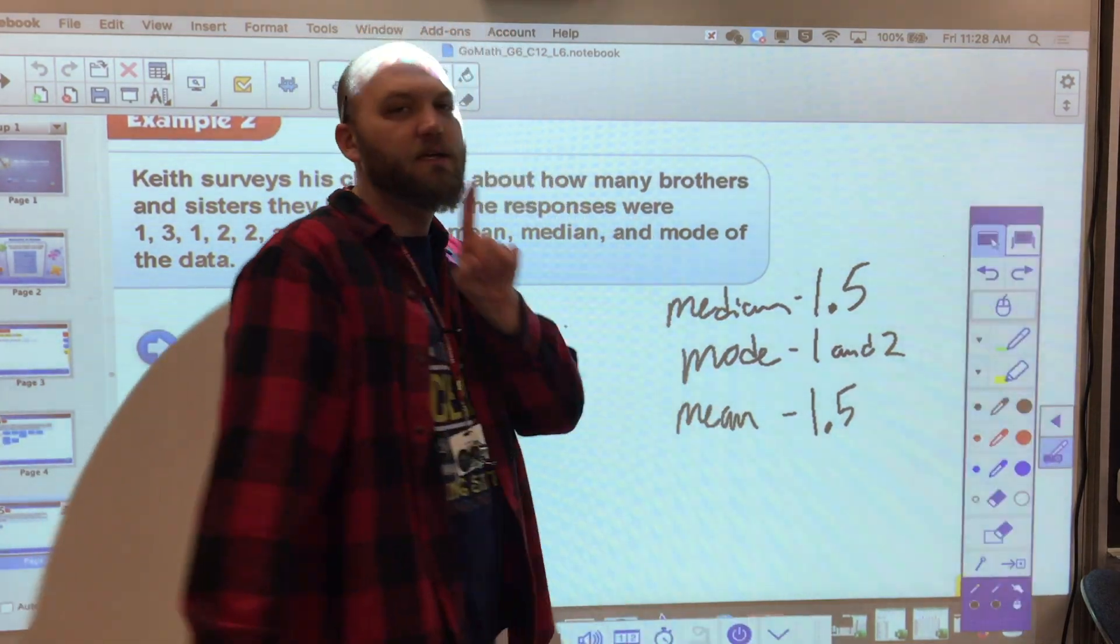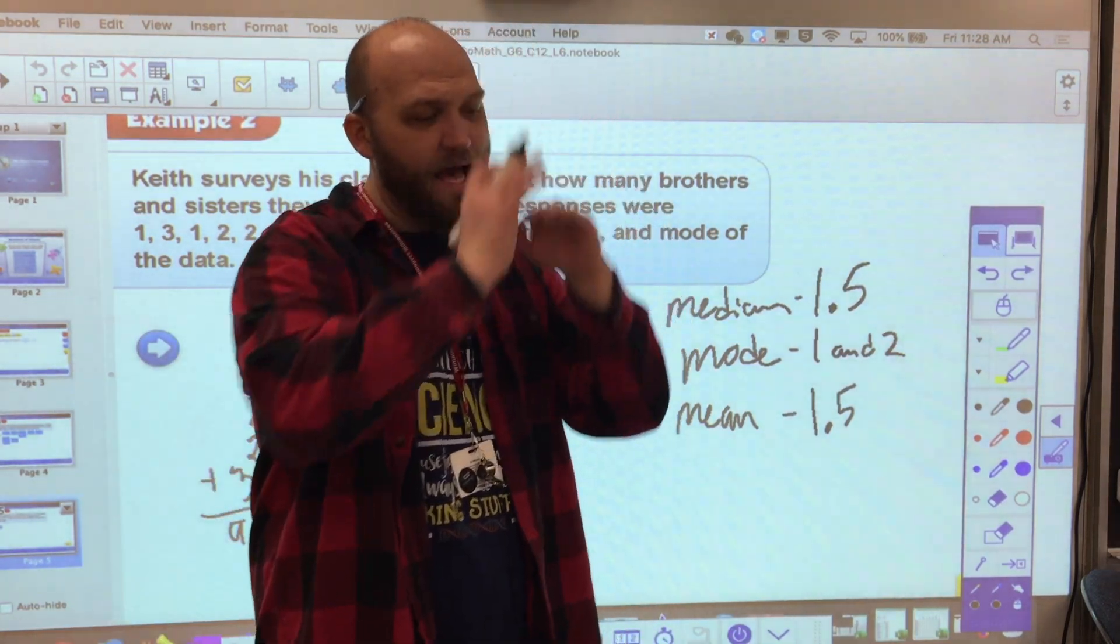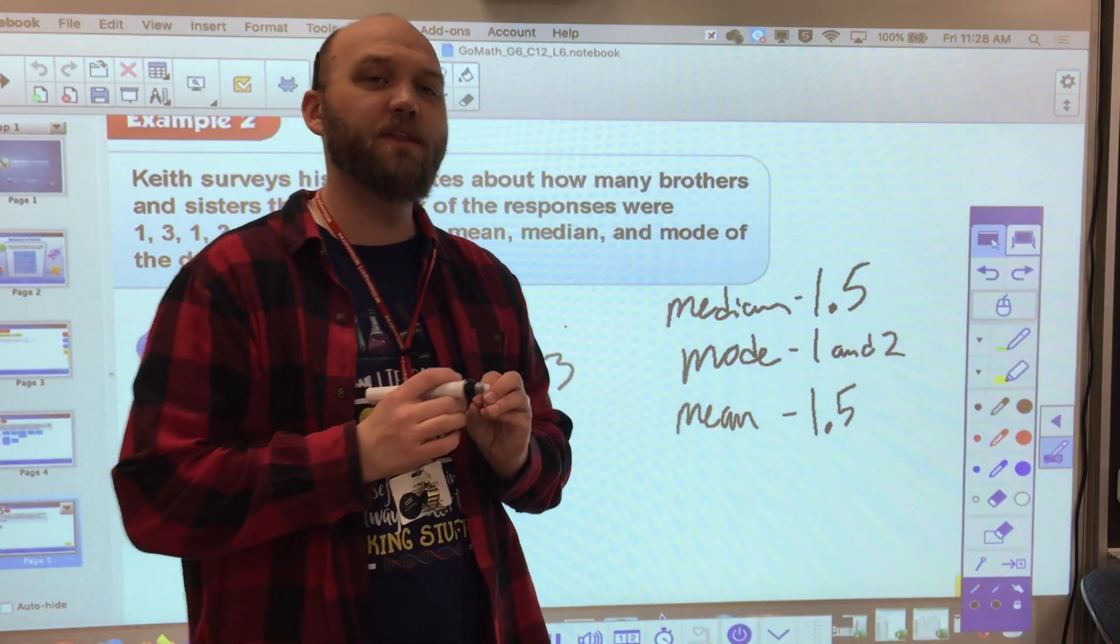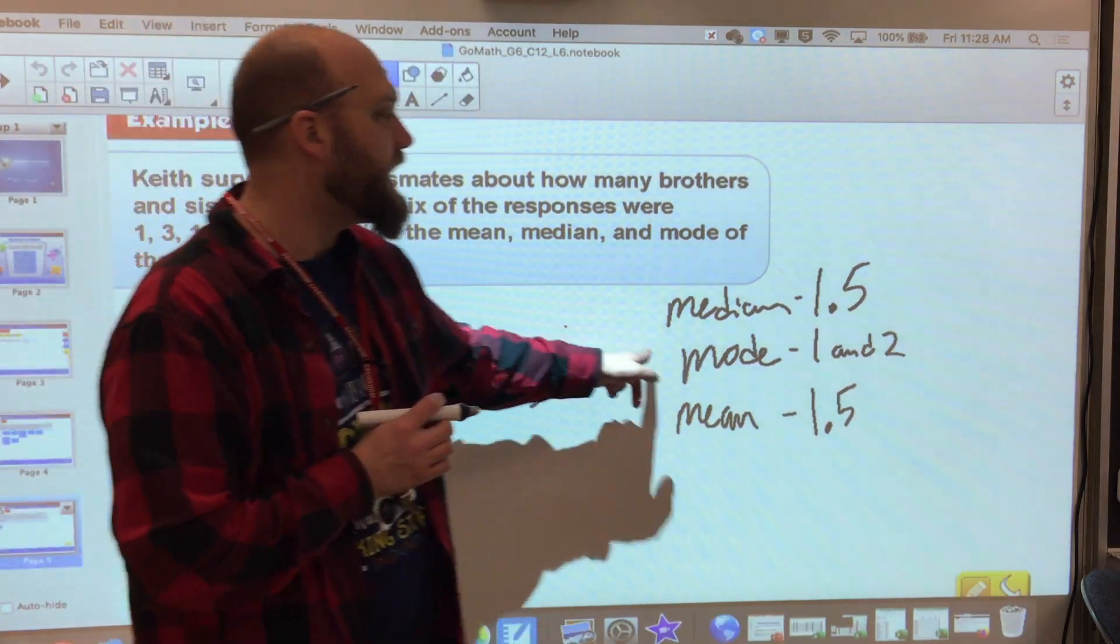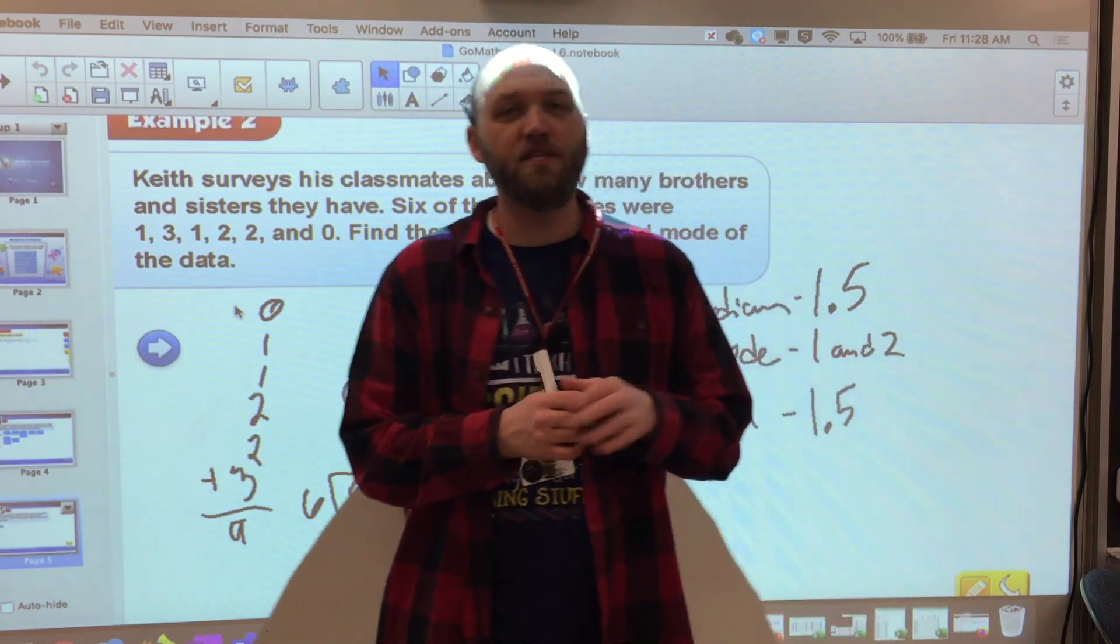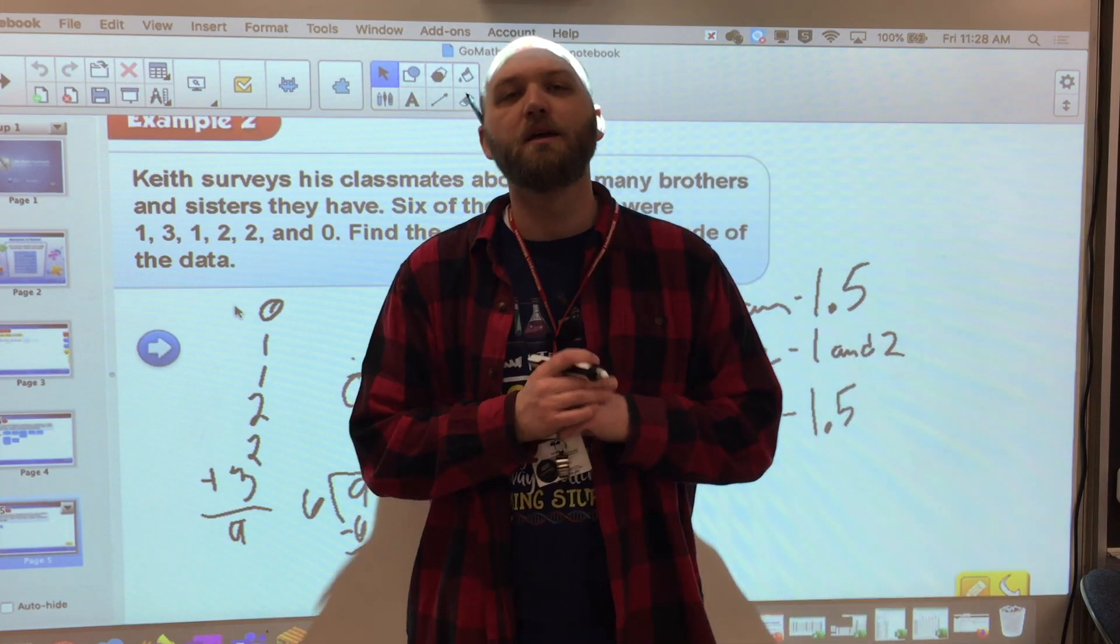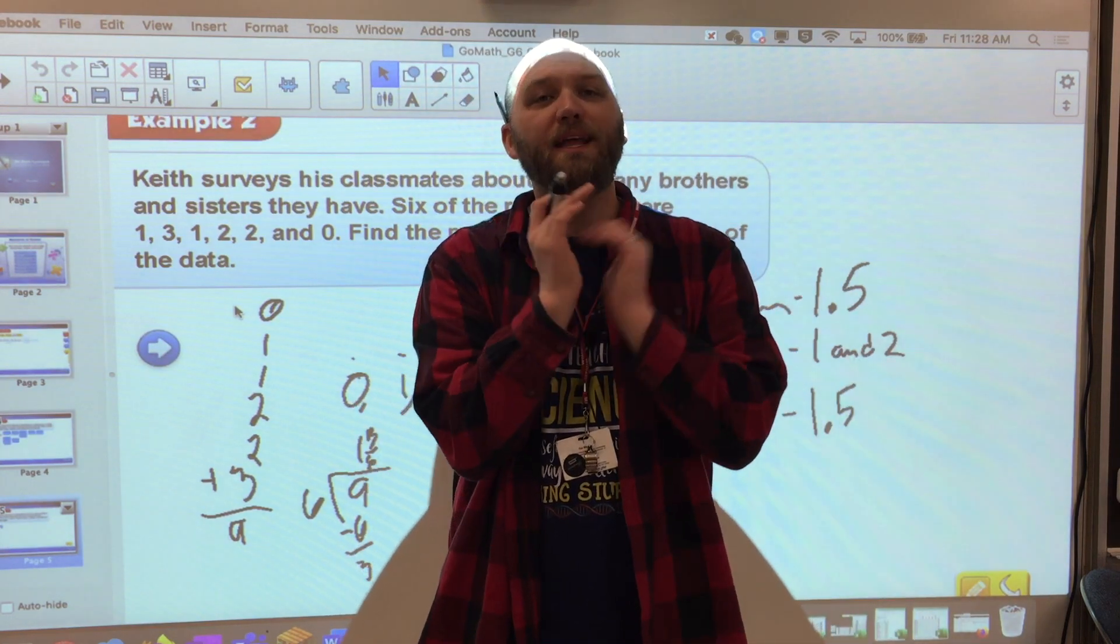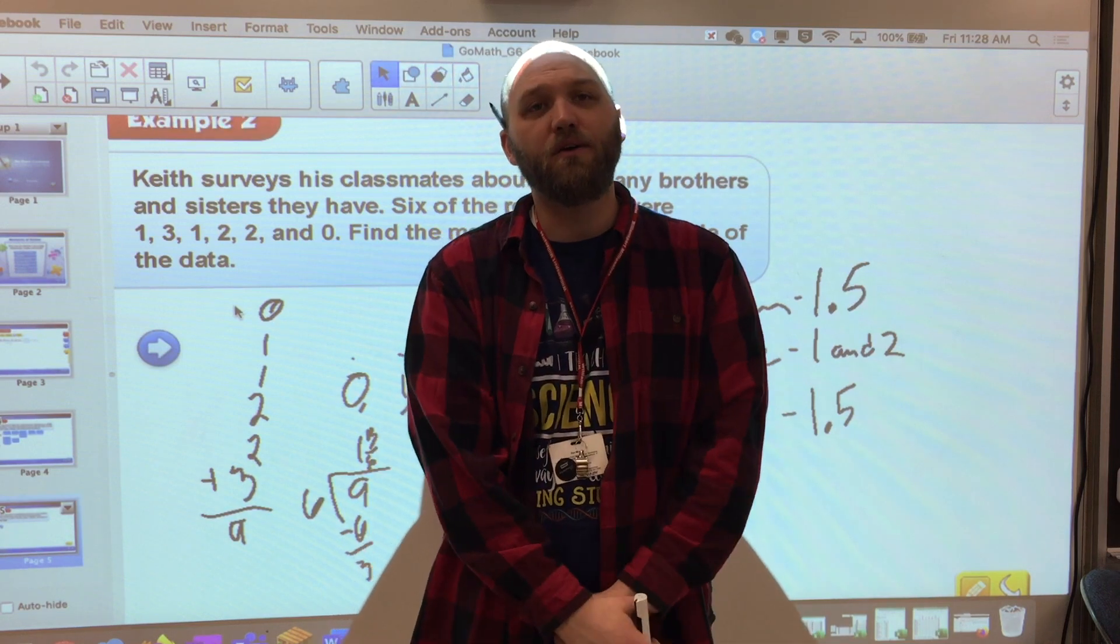So the median is the middle number, take your lowest to highest. The mean is the average. Add all your numbers up and divide by the number of data points you have. In this case, six data points. And your mode is the number that occurs most often. So if you use a data piece, don't forget to mark it somehow. I put little dots on top of mine. But take your time. Write it out. Do not try to do this in your head. But you can feel free to check it with a calculator.